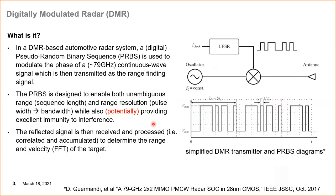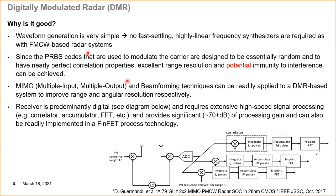The pseudorandom binary sequence is designed to enable both unambiguous range — longer is better — and range resolution, which relates to pulse width and bandwidth, and potentially provides spectral immunity to interference. The reflected signal is then received and processed, which means correlating and accumulating using an FFT to determine the range and velocity of the target.